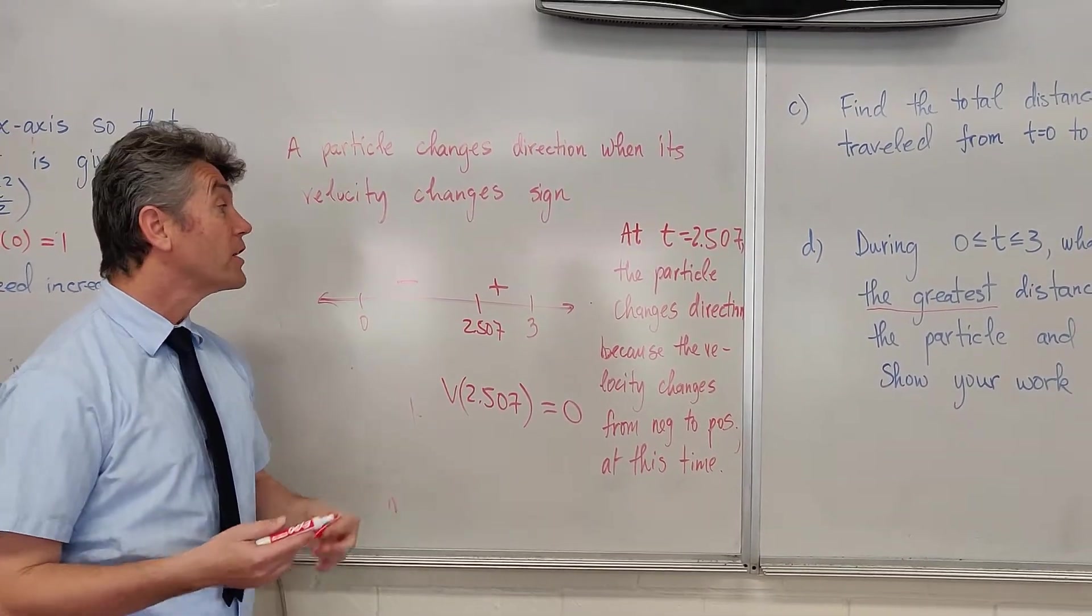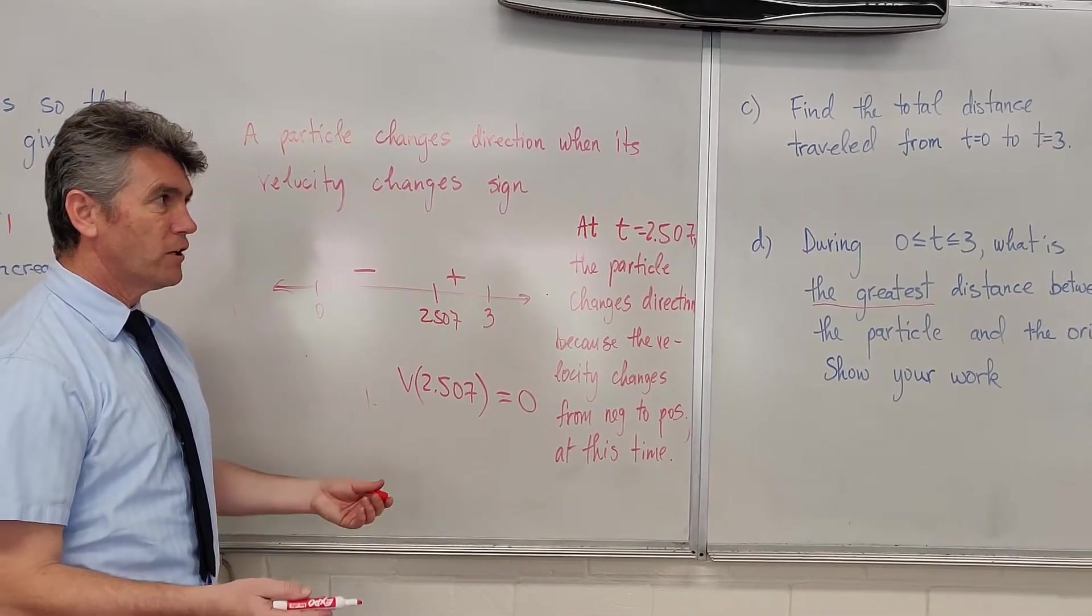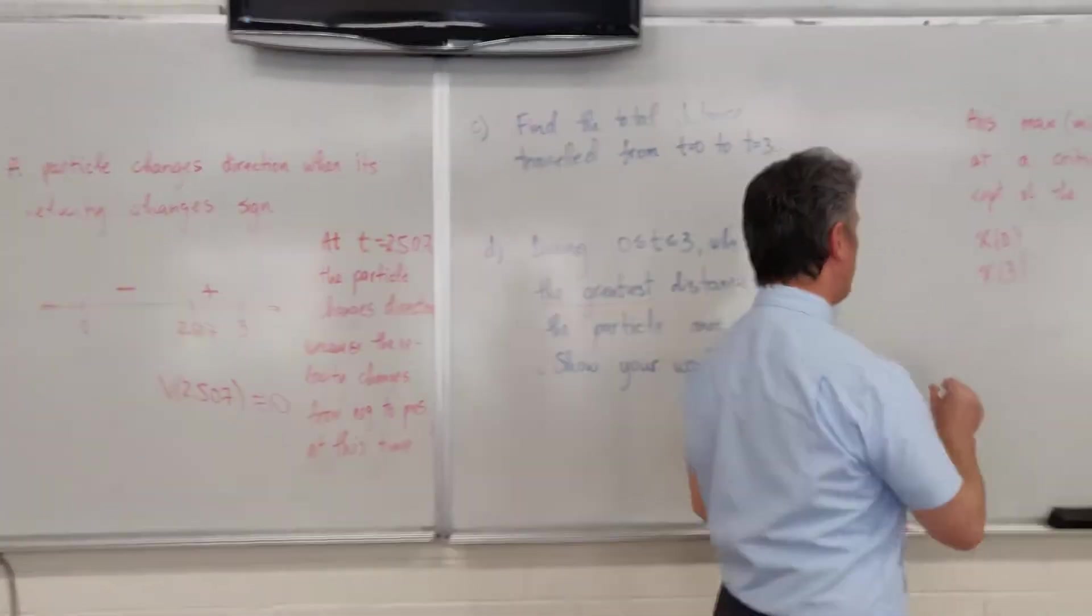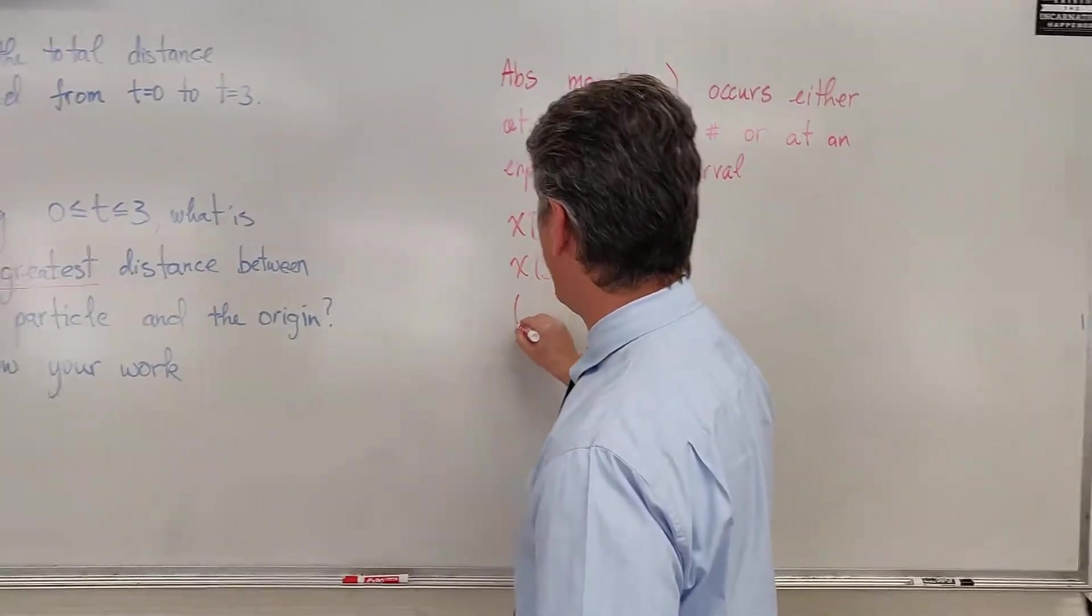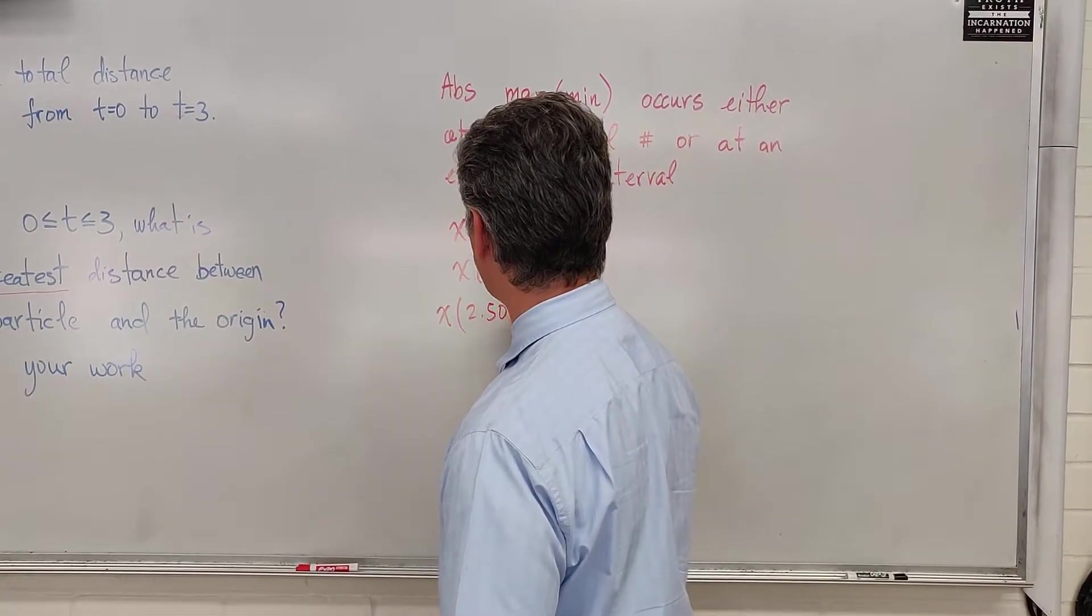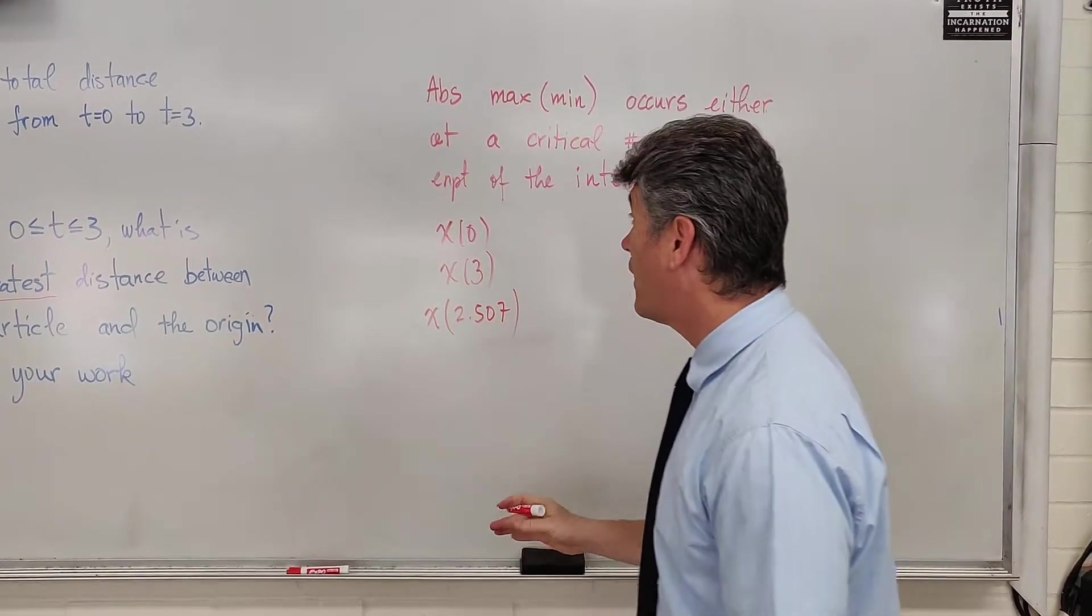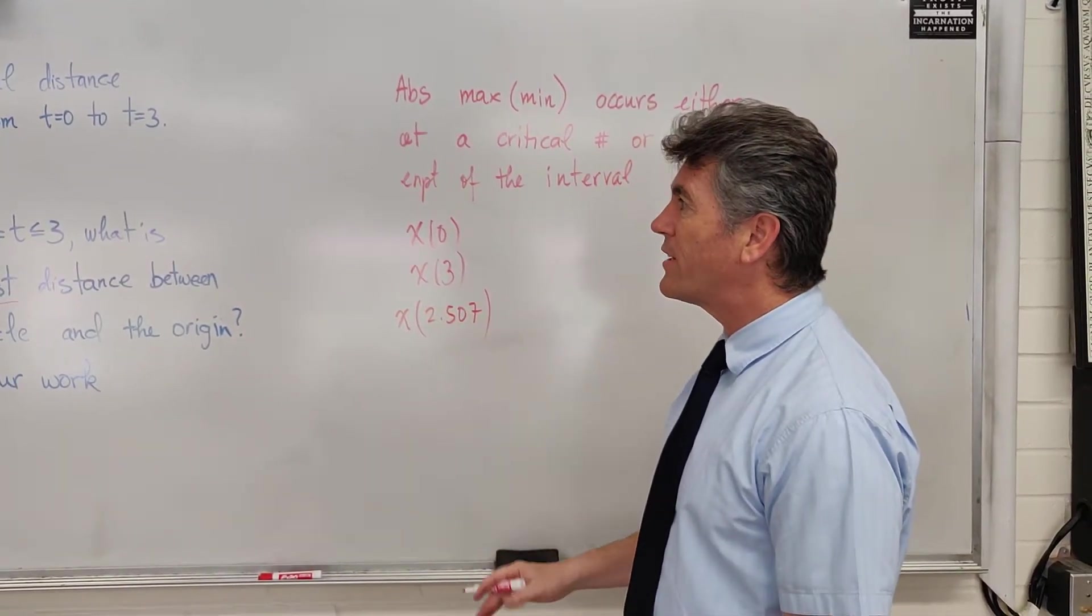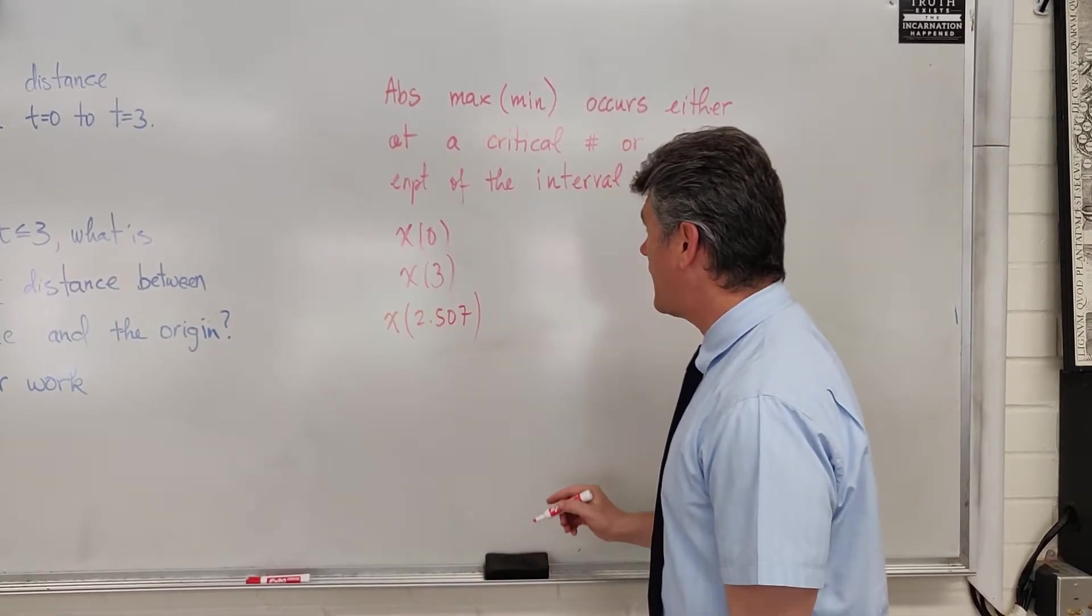But since we are getting ready for the exam, we're going to review everything. So we're going to also find x of 2.507. Our goal right now is to find a position function at 0, 3, and 2.507. So how do you do something like that?